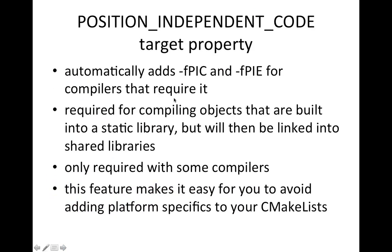The position-independent code target property will automatically add the -fPIC or -fPIE compiler flags for compilers that require it when you're building static libraries. It makes it easy to remove code you've had to add in the past yourself — conditional code based on GCC that adds to the CMake CXX flags. You can get rid of that code now and just set this position-independent code target property.